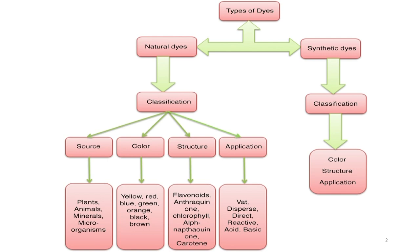From the source, we can say it is from the plant source — giving the botanical name of the plant — or from the animal source, giving the zoological name, or we can get it from microorganisms or minerals. So these are the sources under which natural dyes have been classified: plant, animal, mineral, microorganism and so on.